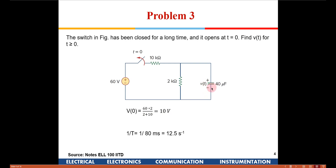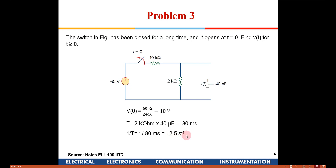That 10 volts will be the initial voltage across the capacitor. Once the switch is opened, the 10 k resistor and 60 volt source go out of the loop — only the 2 k ohm and the capacitance remain. The final value of capacitor voltage V(∞) is 0, and the time constant is 2k times 40 microfarads. So 1/tau equals 1/80 which is 12.5 s⁻¹. The equation is V(t) = 10 e^(−12.5t). The approach is simple: find the initial condition, the final condition, and the time constant.